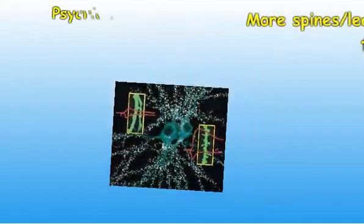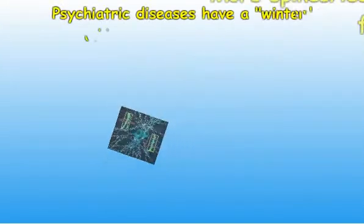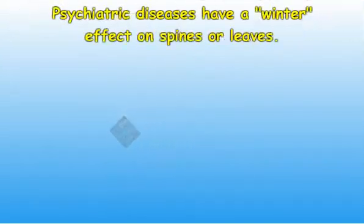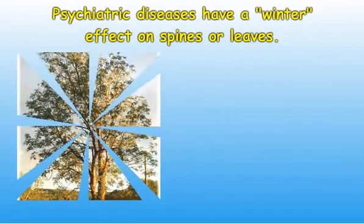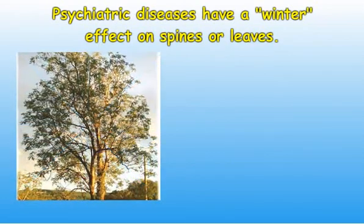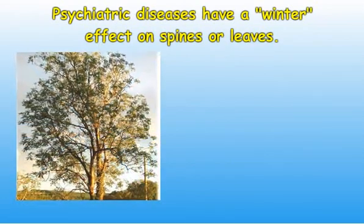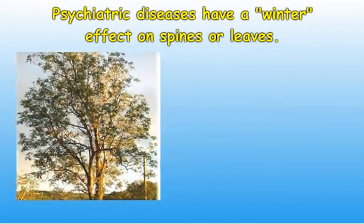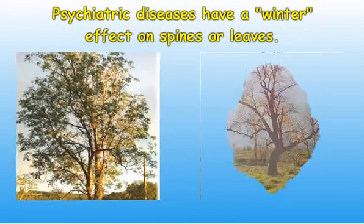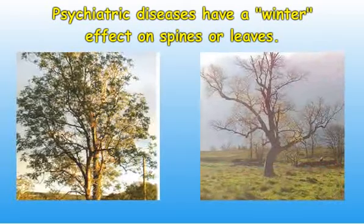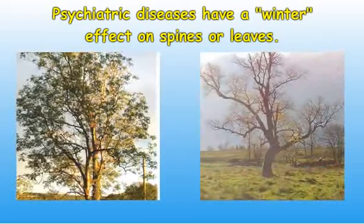In most psychiatric diseases there are changes in the shape of neurons, and in particular the dendritic spines. The dendritic spines or leaves are generally reduced in number and density. This may be compared to the reduction of leaves on a tree which occurs from summer into winter.